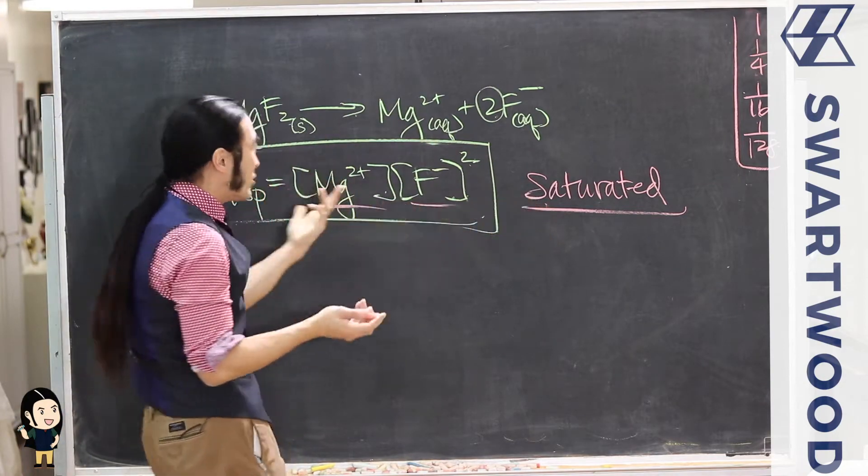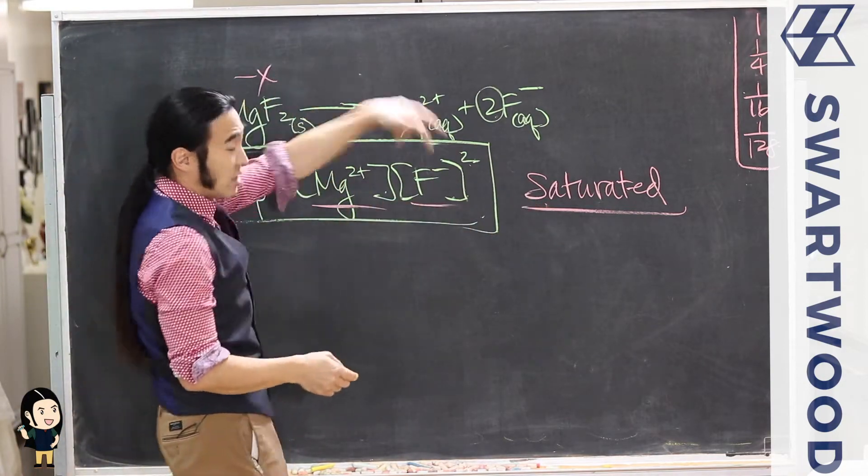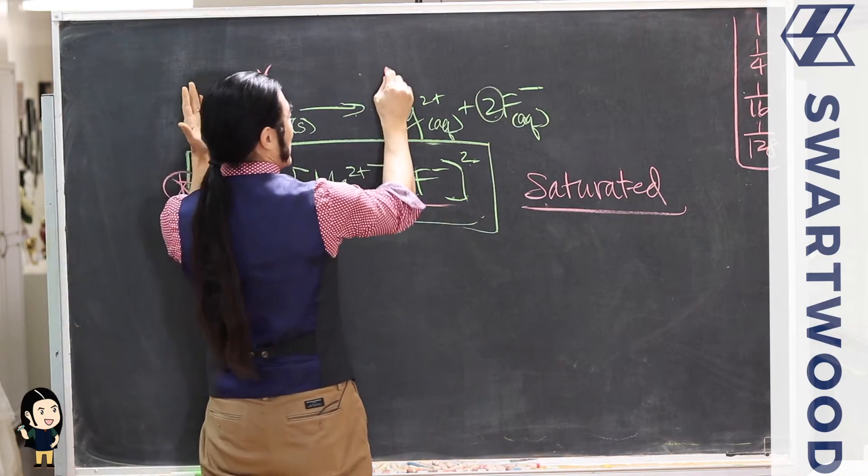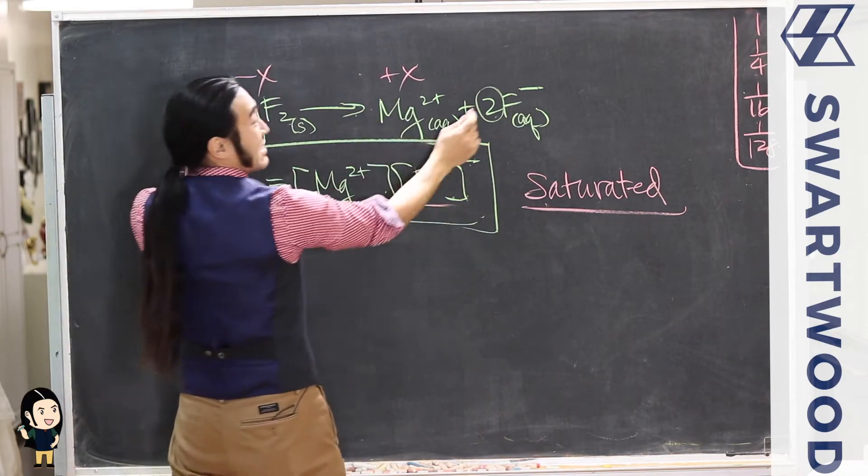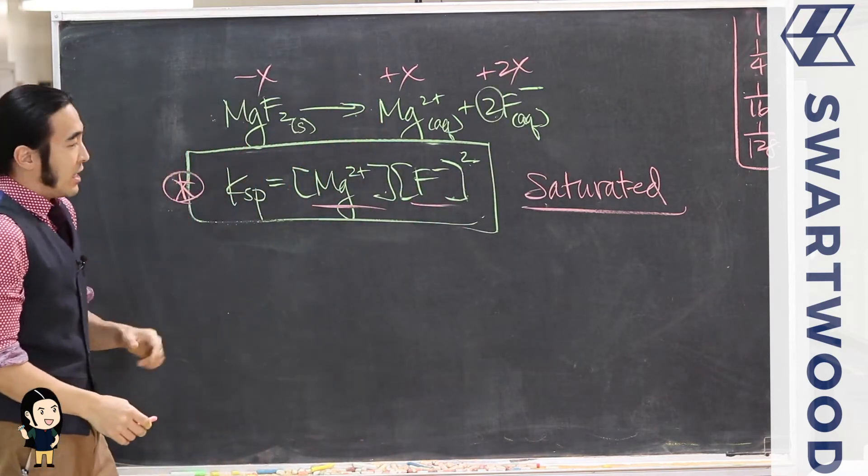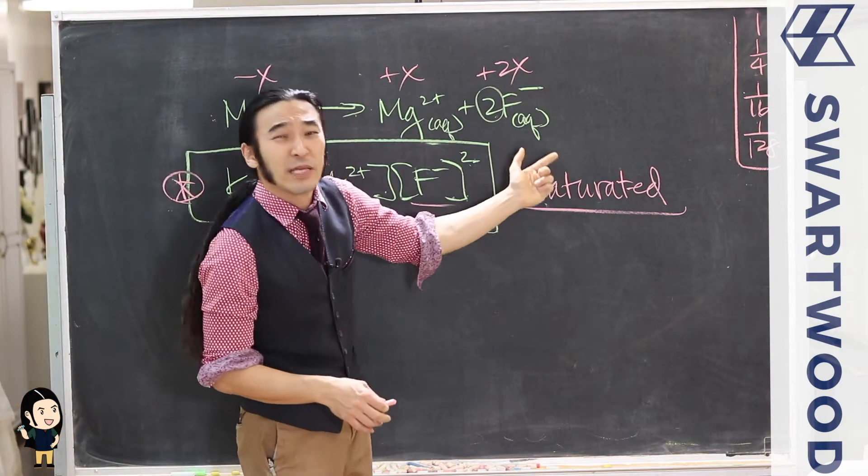Started off with nothing, just pure water. You start dunking this guy in, eventually you become saturated. When you get there, some amount of this guy has dissolved in. But if you follow stoichiometry: this is a one, that's a one, so the same amounts formed here. This is a one, that's a two, so you get twice as much over here.